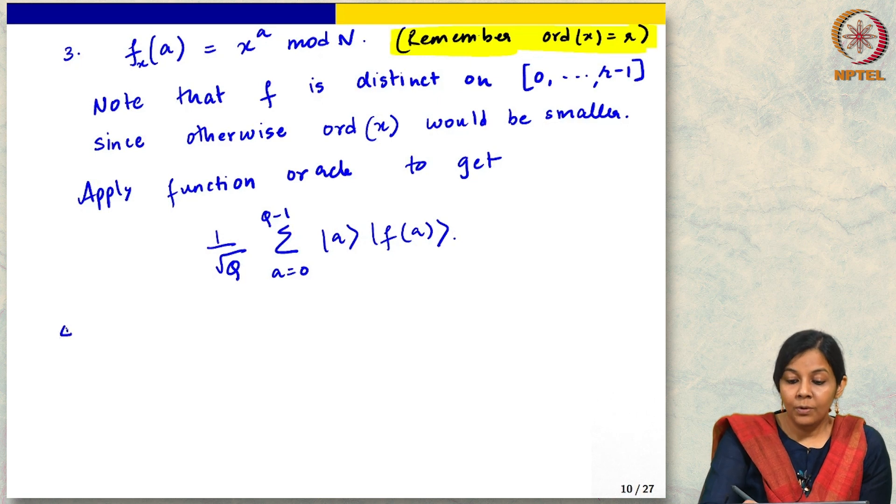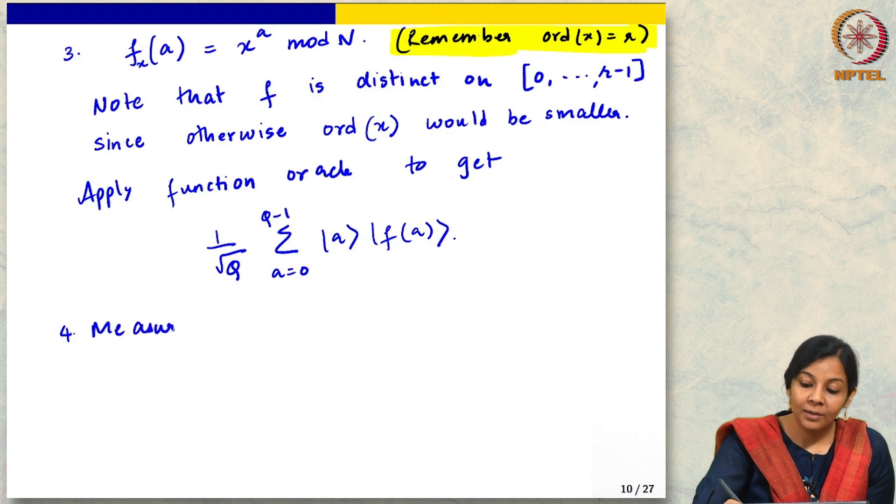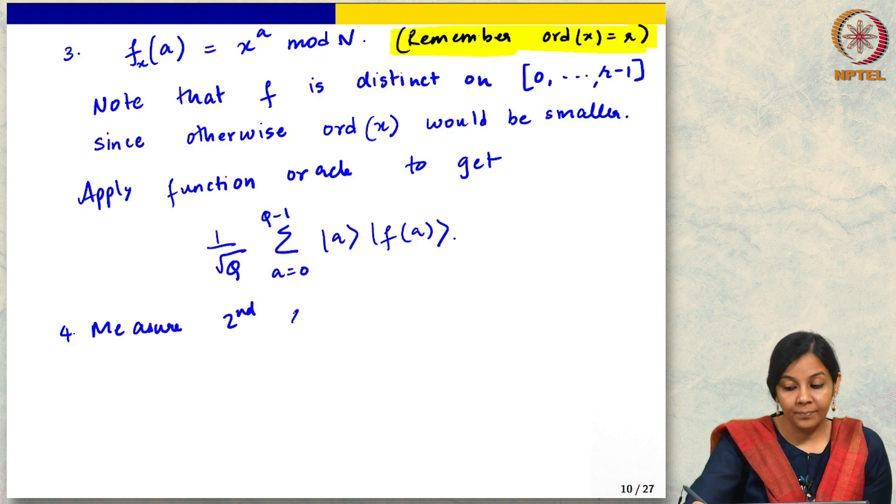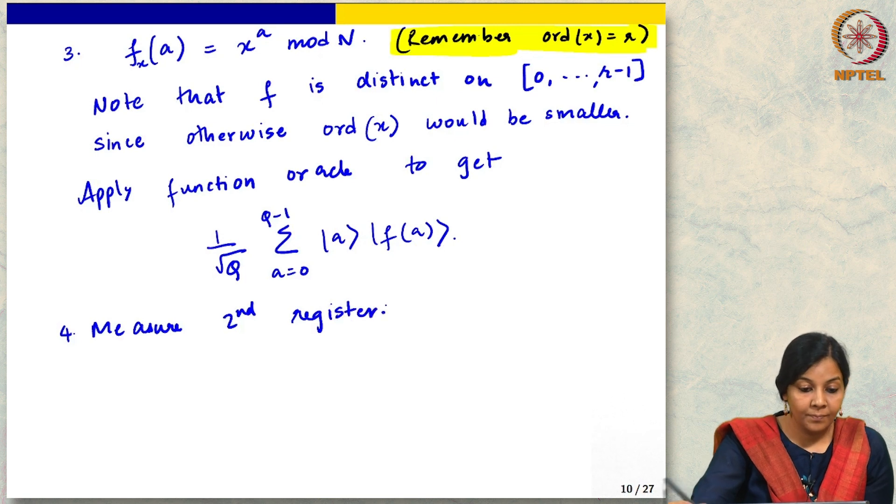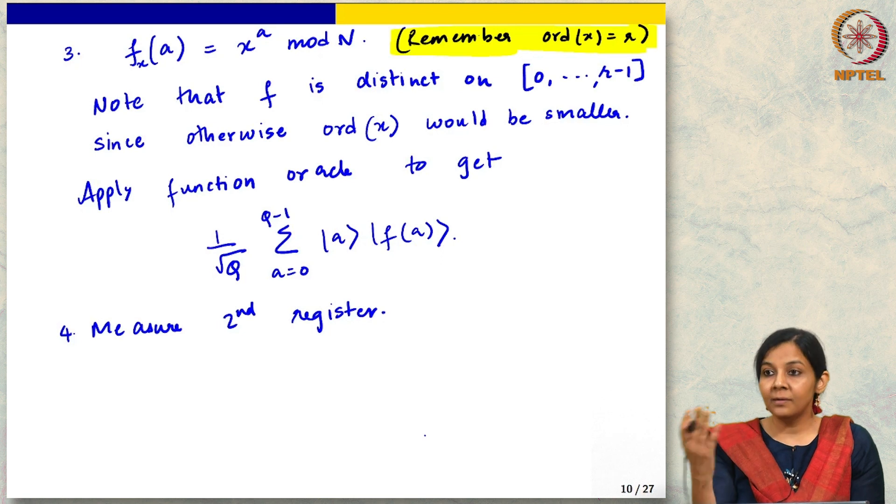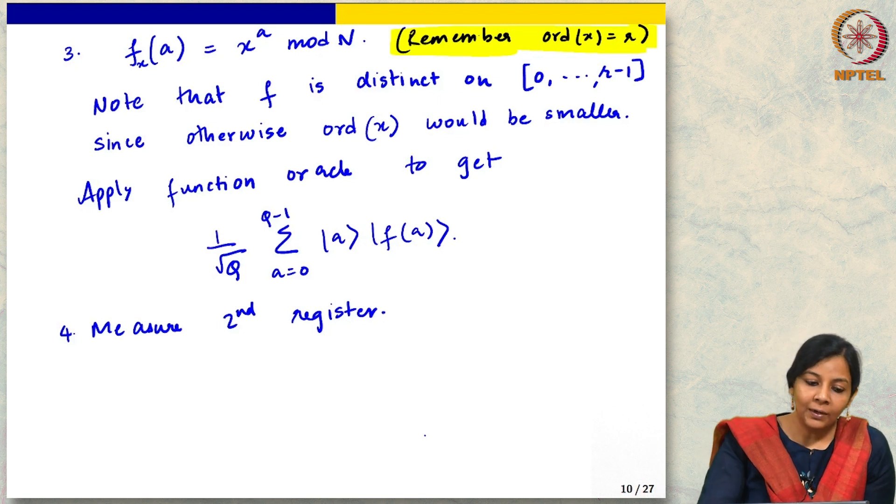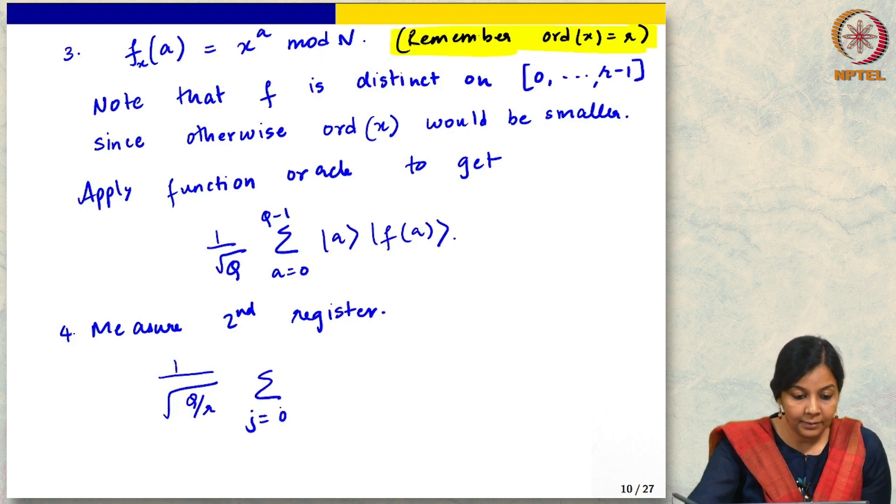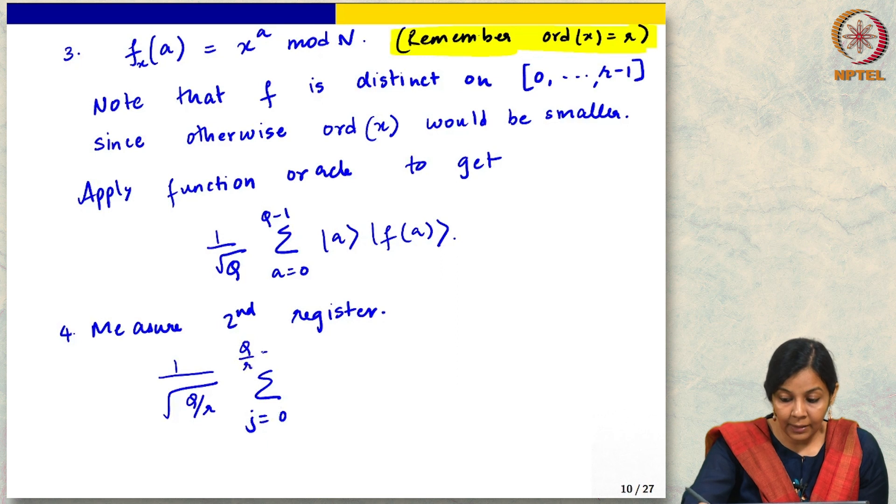Now, who can tell me what we should do next? Measure the second register. Good. So when we measure the second register, as we have seen, all the input values that are inconsistent with the measured value will disappear, and we will renormalize. What we will end up with is something like this. You can convince yourselves that this is the right normalization factor.